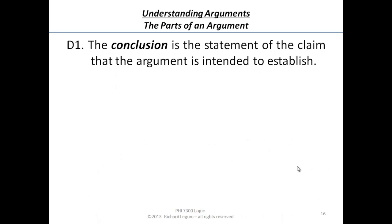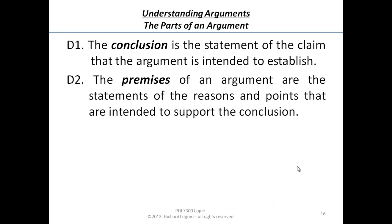We can formulate what we'll call Definition 1, or D1. The conclusion of an argument is the statement of the claim that the argument is intended to establish. So if we want to correctly state the conclusion, we want to make sure it's the claim the argument is supposed to establish. We should be able to write that in one sentence.